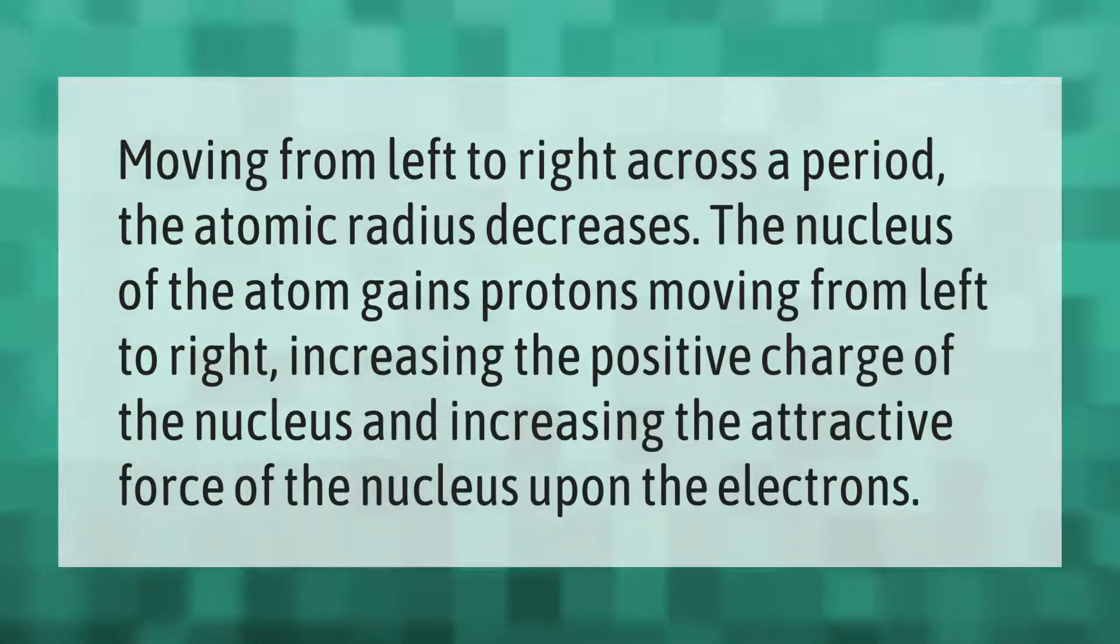Moving from left to right across a period, the atomic radius decreases. The nucleus of the atom gains protons moving from left to right, increasing the positive charge of the nucleus and increasing the attractive force of the nucleus upon the electrons.